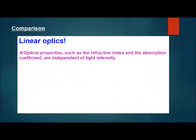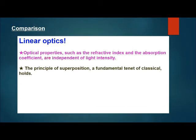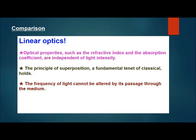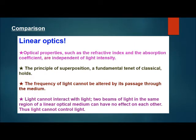In linear optics, optical properties such as the refractive index and the absorption coefficients are independent of light intensity. The principle of superposition also holds true in linear optics. The frequency of light cannot be altered by its passage through the medium, and light cannot interact with light — two beams of light in the same region of a linear optical medium can have no effect on each other. Light cannot control light.